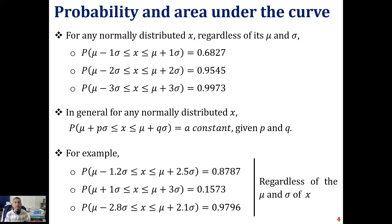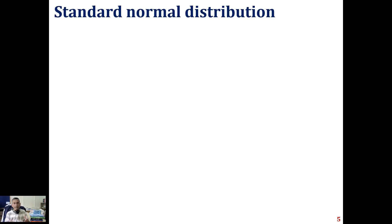This property helps us generalize and calculate areas under the curve. More specifically, we take the help of what is called the standard normal distribution, which makes it easy to compute areas under the curve and thereby estimate the probabilities we are looking for.